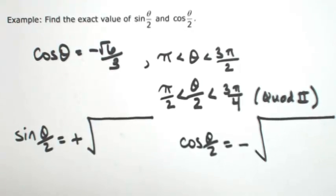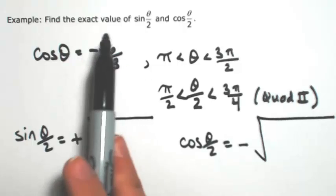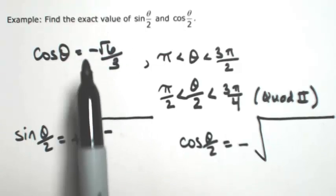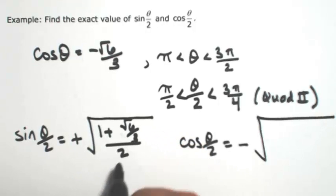Okay, so then for the sine of theta over 2, we're going to have 1 minus the cosine of the angle, which is given, so we don't need to draw a triangle because we don't need to find anything else. So 1 minus that minus, this becomes plus, square root of 6 over 3, over 2.